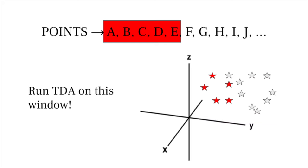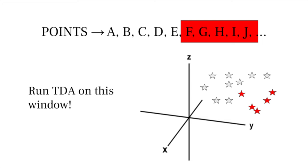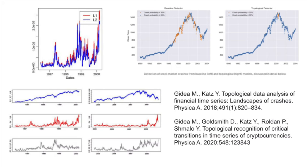Not on the entire data, but on a sliding window through it. For example, we use TDA on points A through E, then on points B through F, then C through G, and so on. That way, we get a gradual reading on how the shape of our data is changing over time. And if that shape changes dramatically or in certain known ways, we can actually use it to predict, with some proven accuracy, when disaster is near. And that's, frankly, insane.